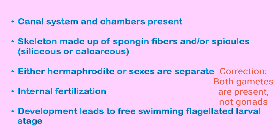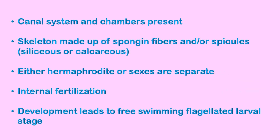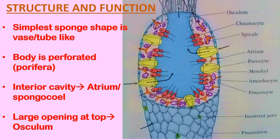Most sponges are hermaphrodite, meaning both male and female gonads are present within the same animal, though in some cases sexes are separate. Surprisingly, internal fertilization takes place, and embryonic development leads to a free-swimming flagellated larva. This larval stage is very important for species dispersal in these sessile animals.